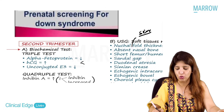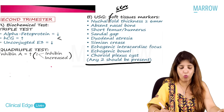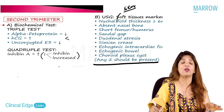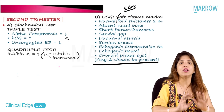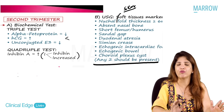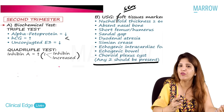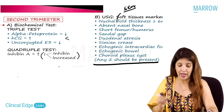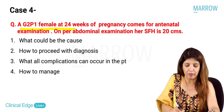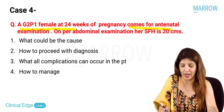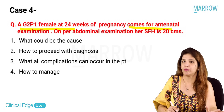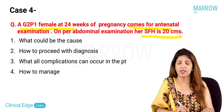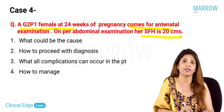Aneuploidy screening — including first and second trimester tests — is an important topic both clinically and for MCQs. Our fourth patient is a G2P1 female at 24 weeks who comes for antenatal examination. On per-abdominal examination, her symphysiofundal height is 20 centimeters. The question is: what could cause SFH to be less than the period of gestation, and how do we proceed?